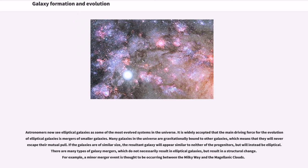Astronomers now see elliptical galaxies as some of the most evolved systems in the universe. It is widely accepted that the main driving force for the evolution of elliptical galaxies is mergers of smaller galaxies. Many galaxies in the universe are gravitationally bound to other galaxies, which means that they will never escape their mutual pull. If the galaxies are of similar size, the resultant galaxy will appear similar to neither of the progenitors, but will instead be elliptical. There are many types of galaxy mergers, which do not necessarily result in elliptical galaxies, but result in a structural change. For example, a minor merger event is thought to be occurring between the Milky Way and the Magellanic Clouds.